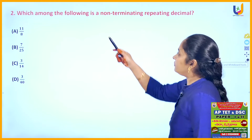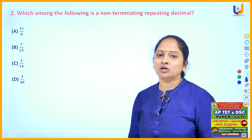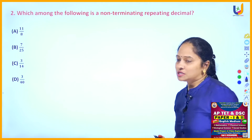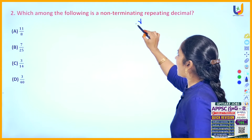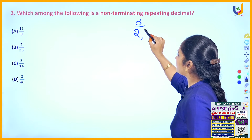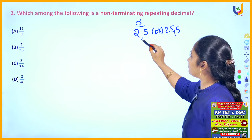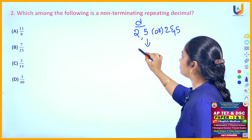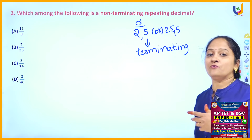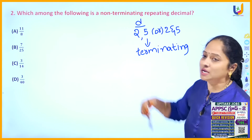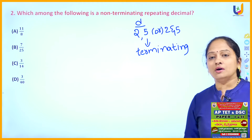The next question: which among the following is a non-terminating repeating decimal? We have a shortcut method to check whether rational numbers are terminating or not. If the denominators are combinations of 2s, 5s, or 2s and 5s, then those rational numbers are terminating decimals. Other than these, any other number in the denominator makes it a non-terminating repeating decimal.